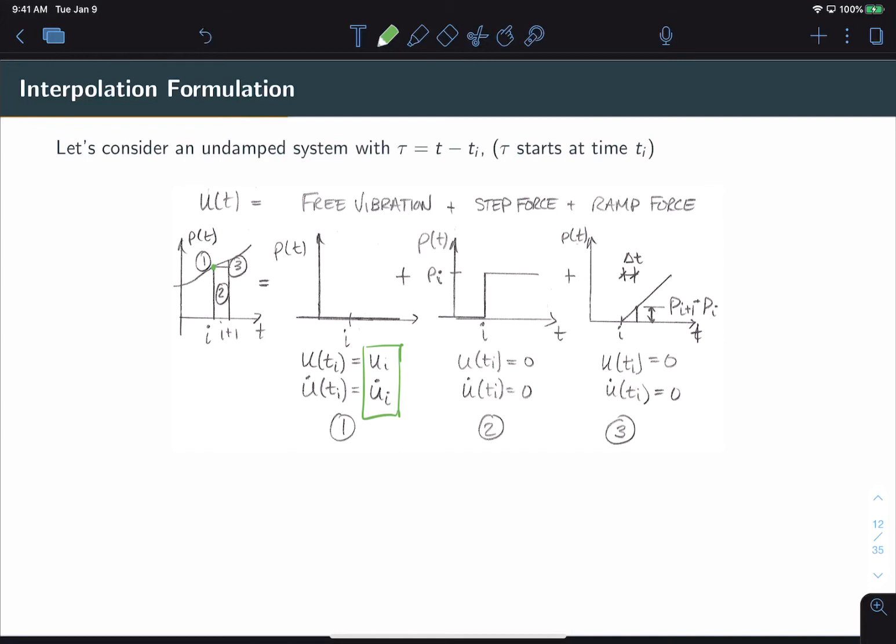Next we add a component for step force which describes this rectangular portion of the force here. That is our function two. In this case we ignore initial conditions and simply simulate a step force with a magnitude corresponding to the value of the force at i.